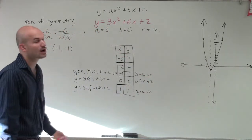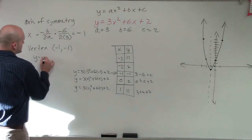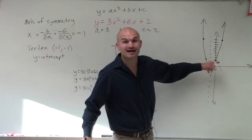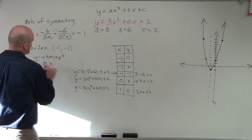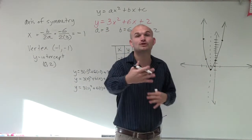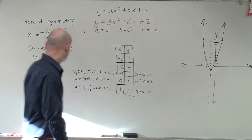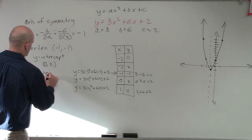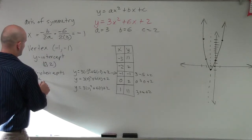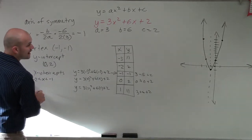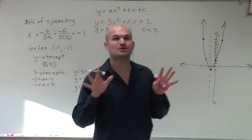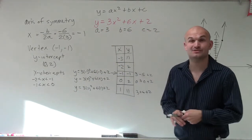Next, we need to determine the x and y-intercepts. The y-intercept is where the graph crosses the y-axis — you can see the graph crosses the y-axis at 0 comma 2. The x-intercept is where the graph crosses the x-axis; it doesn't look like it crosses at an integer, so I'm just going to estimate. The x-intercepts appear to be between negative 2 and negative 1, and between negative 1 and 0. We'll learn how to find the exact values later.